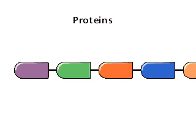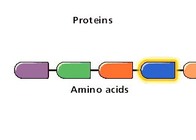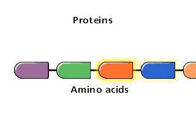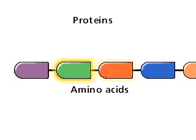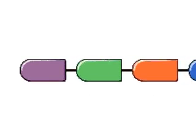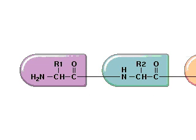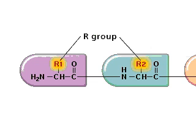Proteins are long chains of amino acids. There are 20 common kinds of amino acids, represented here by different colors. Each type of amino acid has a similar chemical structure except for a variable part known as the R group.